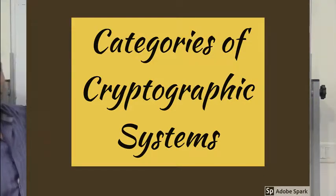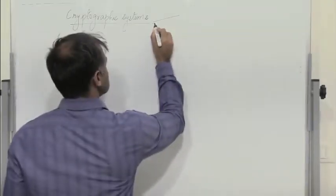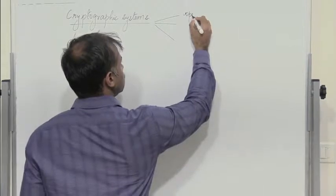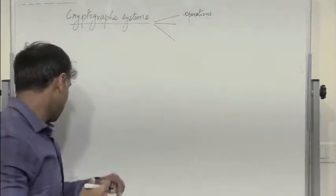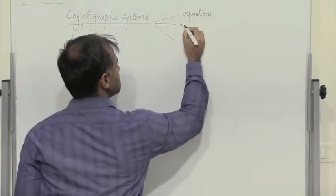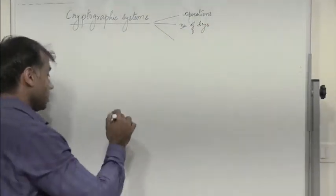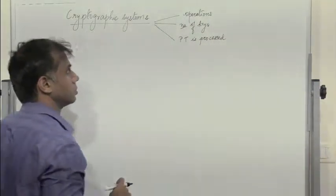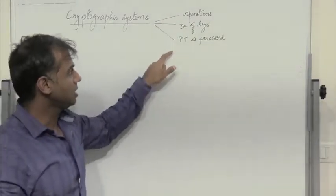We will observe how cryptographic systems can be categorized in different dimensions. When we consider all cryptographic systems, they can be categorized along three independent dimensions. All kinds of encryption and decryption algorithms can be categorized in these three ways.